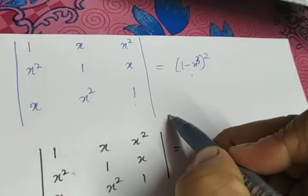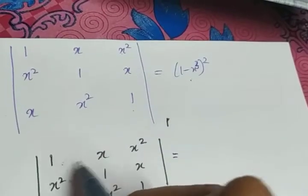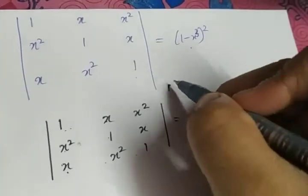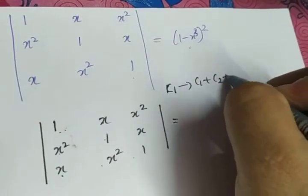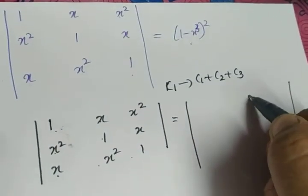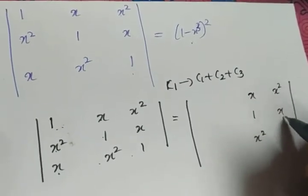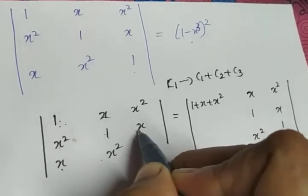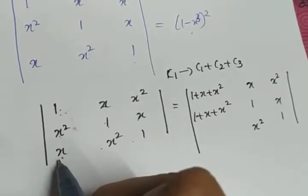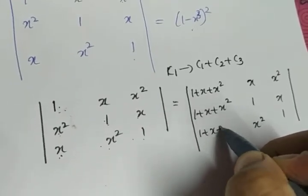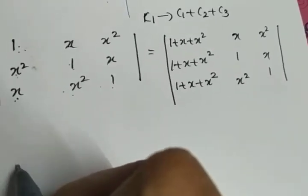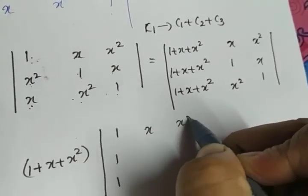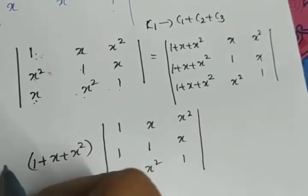What I am going to do is apply the transformation C1 → C1 + C2 + C3. Adding all elements in each row: 1 + x + x², x² + 1 + x, and x + x² + 1 — all equal 1 + x + x². So the first column becomes all 1s, and (1 + x + x²) is common, so we take it outside. The determinant becomes (1 + x + x²) times the determinant with first column [1, 1, 1], second column [x, 1, x²], third column [x², x, 1].